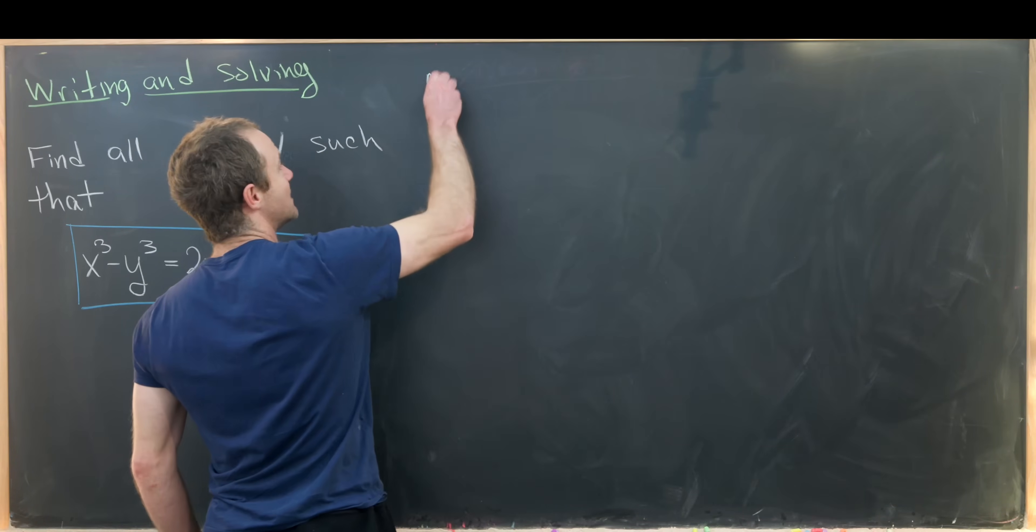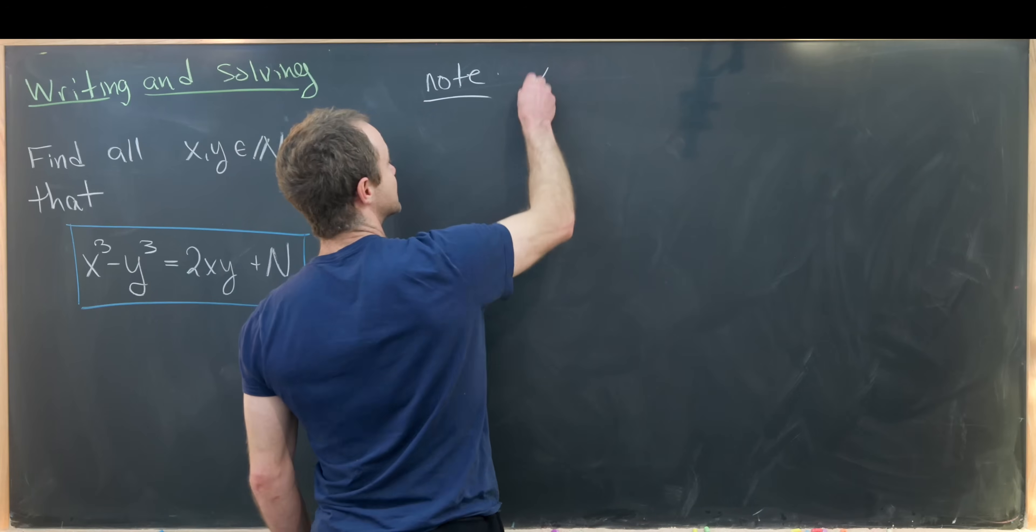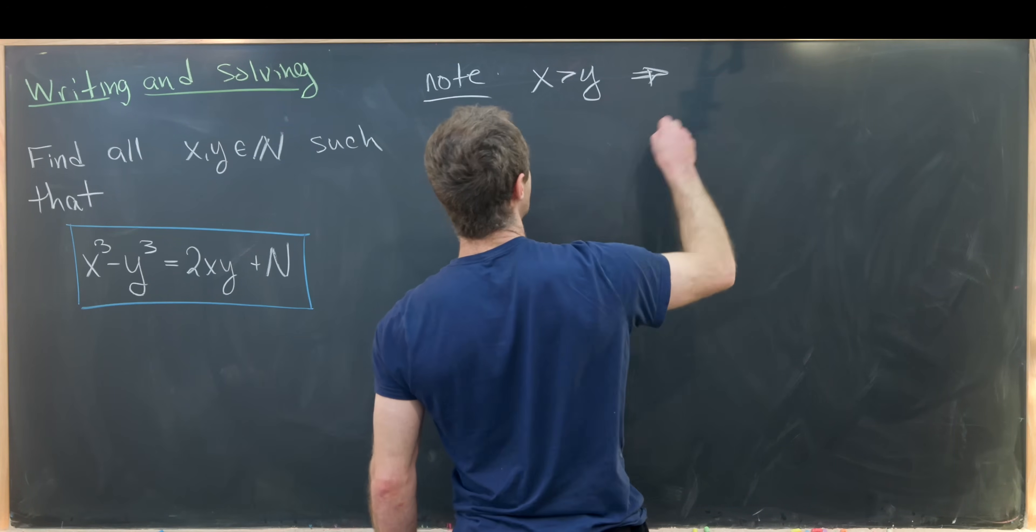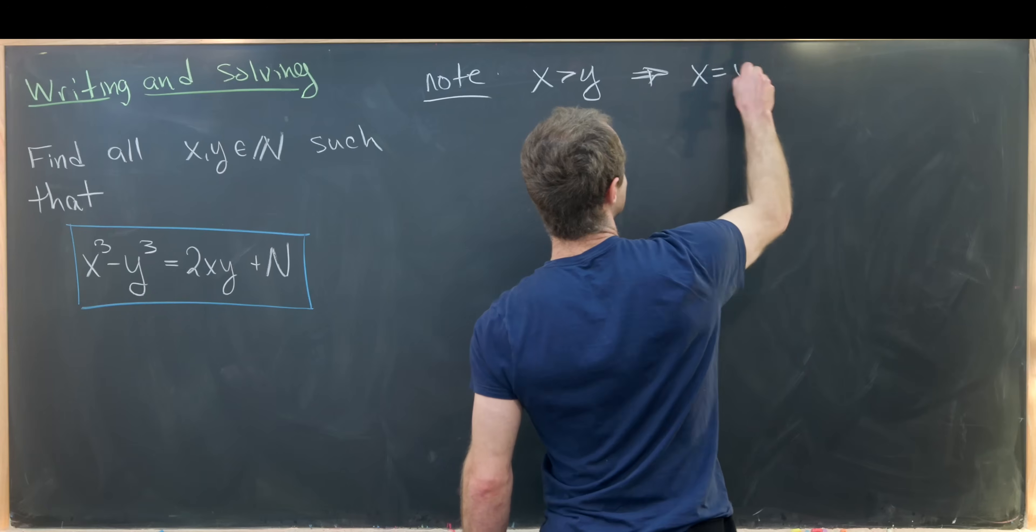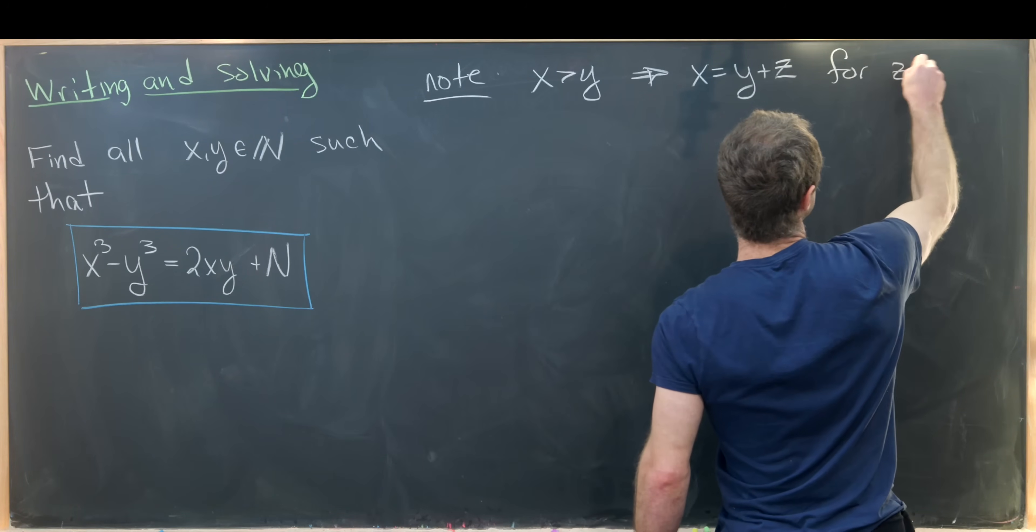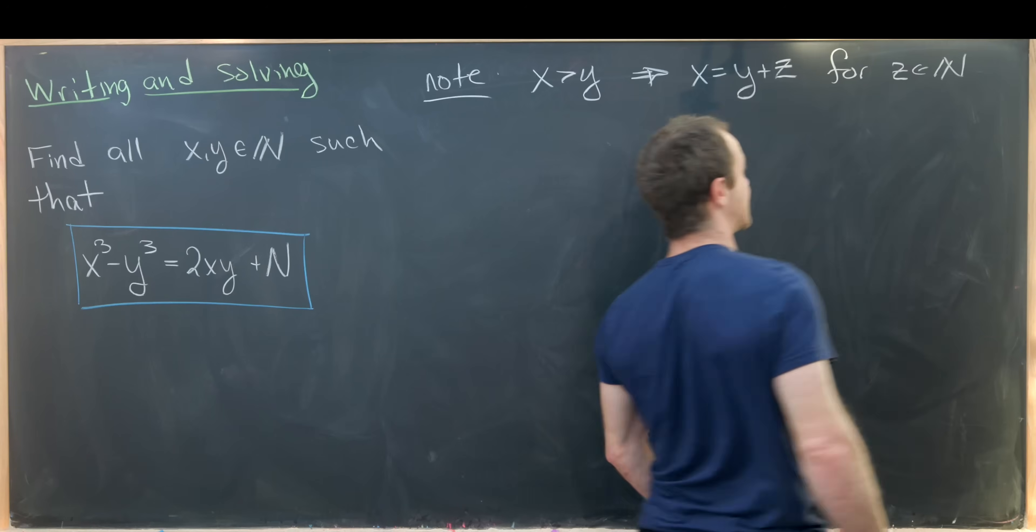X is most definitely strictly bigger than y, which means we can write x as y plus z for some z which is also a natural number.